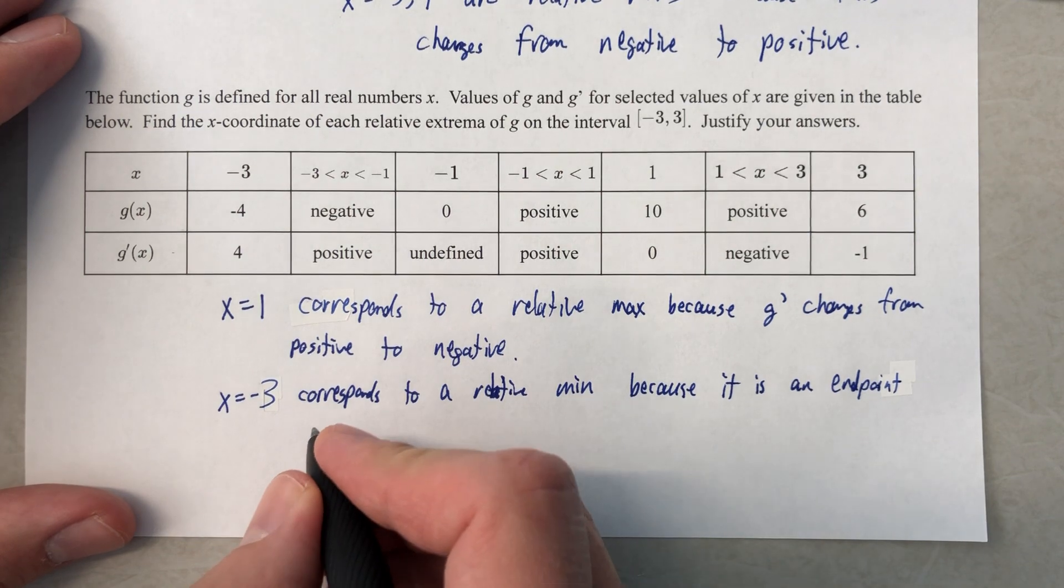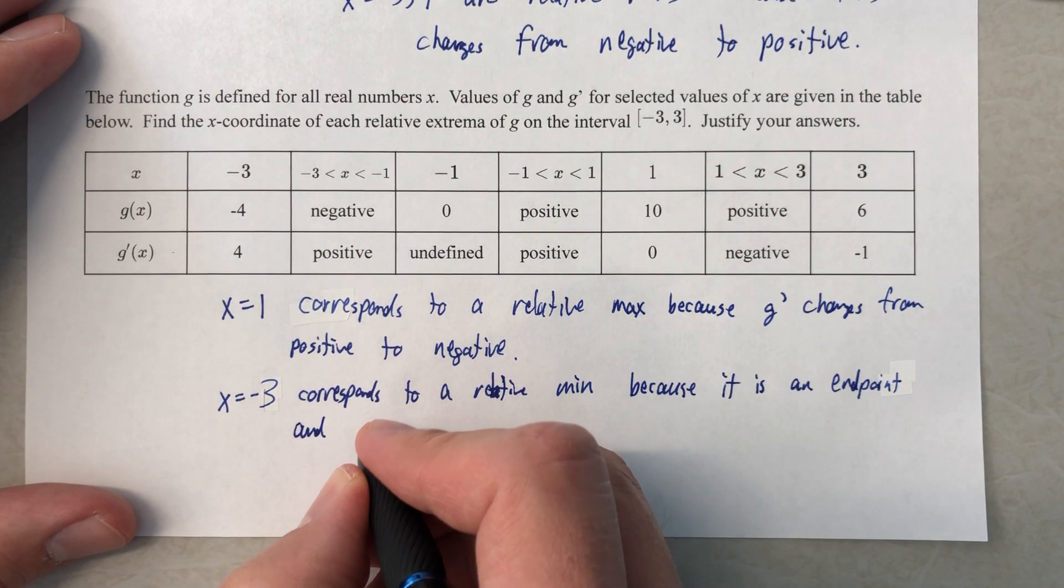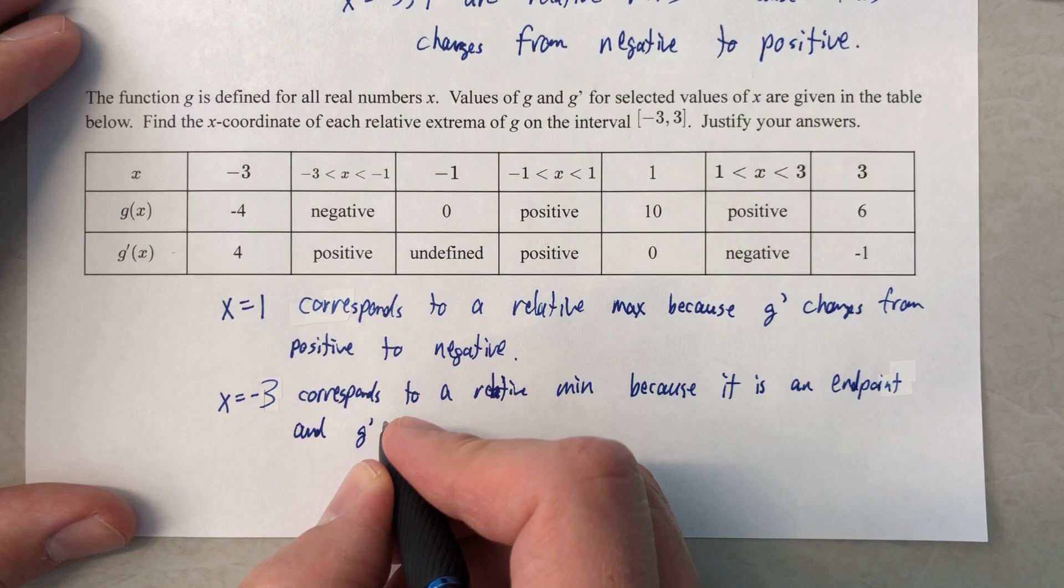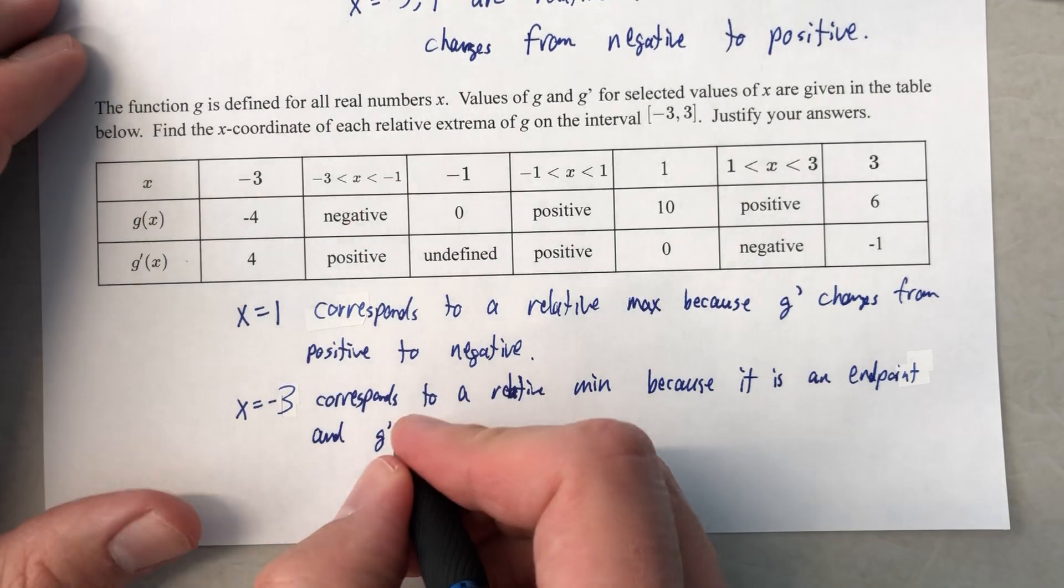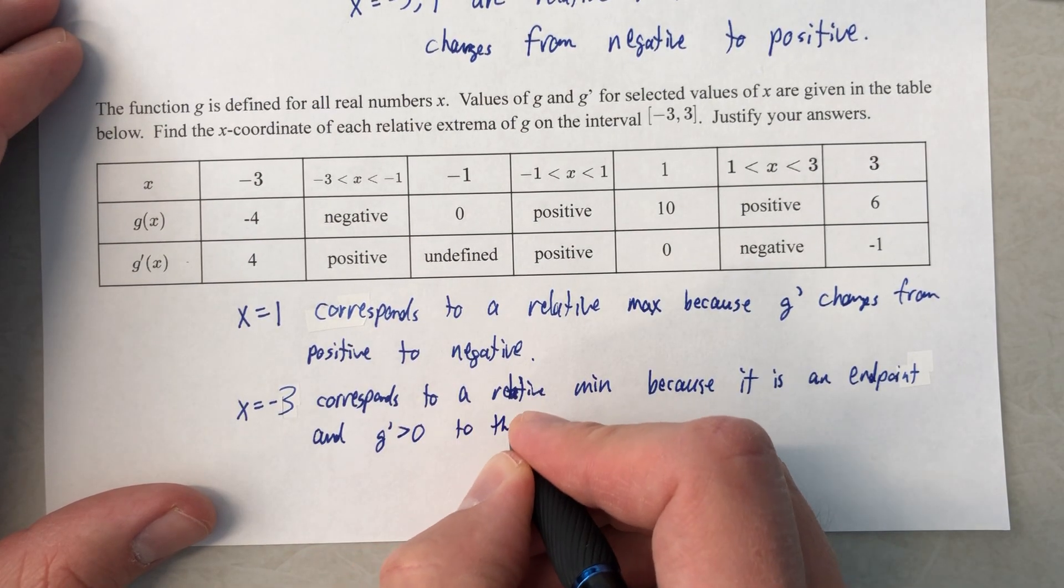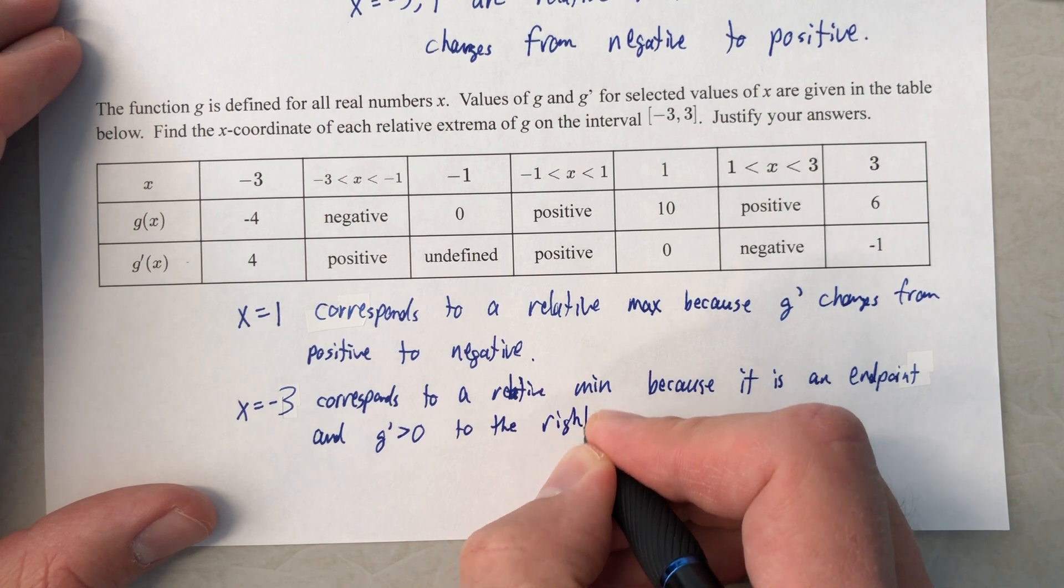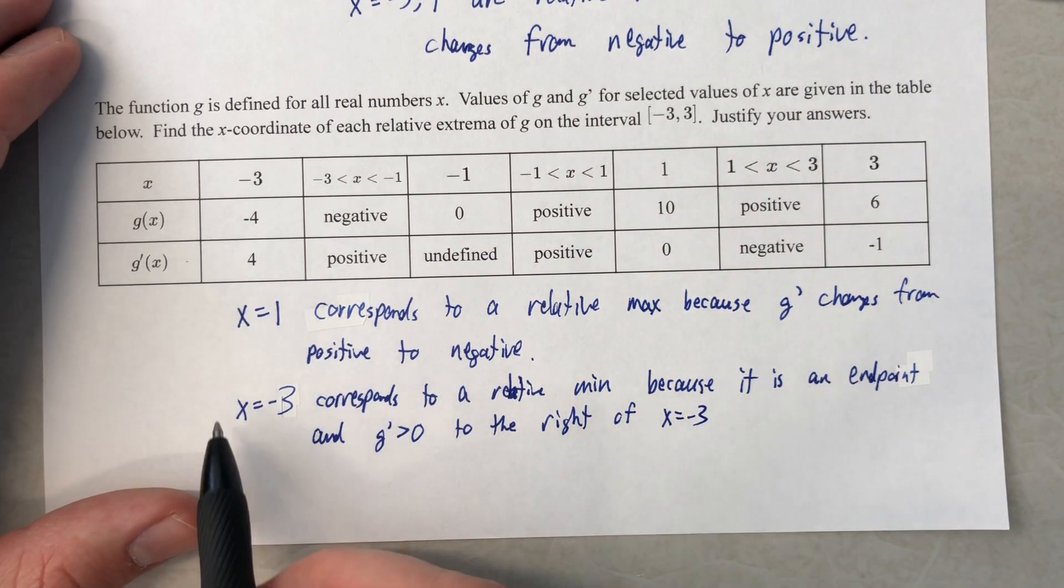Corresponds to a relative minimum because it is an endpoint and g prime is positive to the right of x equals negative 3. So the function is going up.